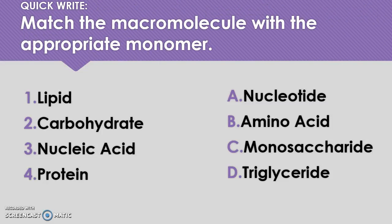In this area we're going to match the macromolecule with the appropriate monomer. Let's start with lipids — what is the appropriate monomer for lipids? What about carbohydrates? Three: nucleic acids, and four: proteins.